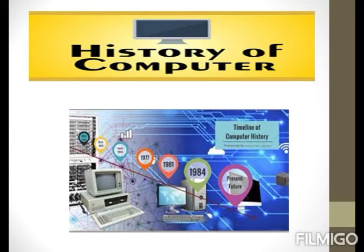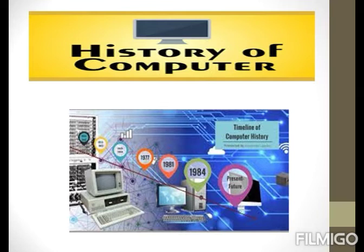A computer is an electronic device that can perform a variety of operations provided with a set of instructions called programs. What is a program? A program is a small set of instructions. A computer can store data and information in its memory, process them, and produce the desired results.